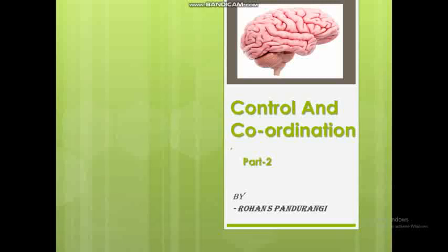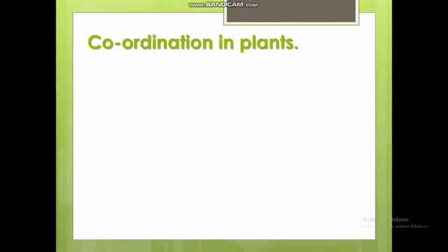Hello friends, we are going to be in Class 10 Science, 5th chapter — Control and Coordination, Part 2 in the notes. Part 1 is linked in the description, so visit our playlist for Control and Coordination Part 1. In Part 1, we saw the animal nervous system, neurons, peripheral nervous system, central nervous system, the brain and functions of its parts. Now we take up coordination in plants.